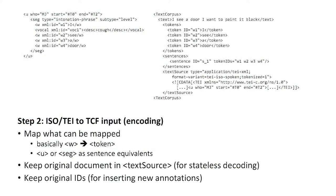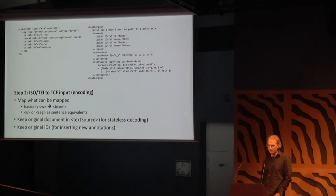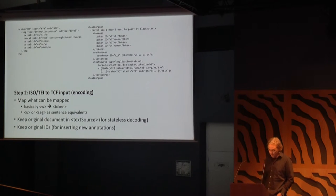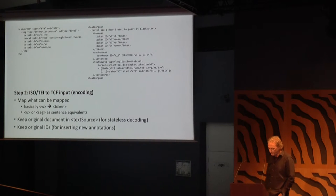Step two is to map this ISO-TEI format to the TCF input — the encoding step. Basically, what we do here is we map what can be mapped and ignore the rest. This means we map word elements to tokens, also sometimes punctuation elements to tokens, but that's not very common in spoken language transcription. And we use either the utterance element, or if it exists, the more fine-grained segmentation element SEC as the sentence equivalent, which is also important for many annotation web services.